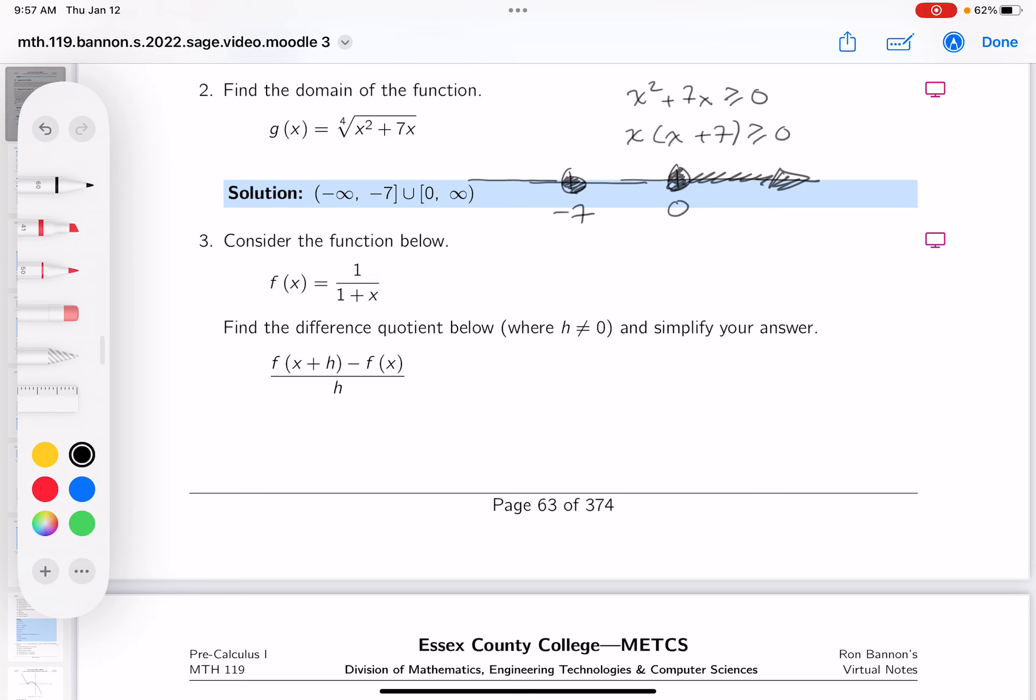If you took a number below minus seven, like minus eight, and plugged it in, you get a negative times a negative, which is a positive, and that certainly satisfies that inequality.